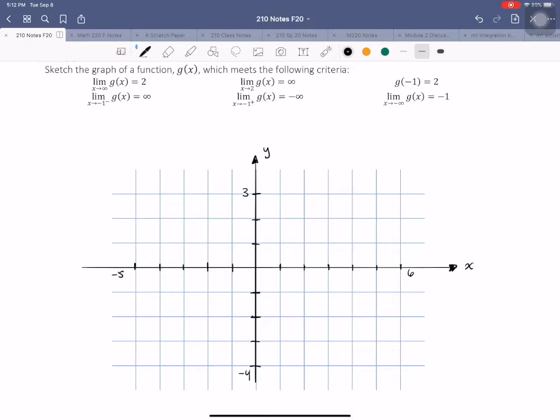Okay, so as you can see here, I have my x-axis running from negative 5 to positive 6, and my y-axis running from negative 4 to 3.